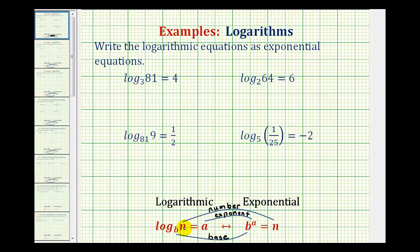Log base b of n equals a means b raised to the power of a equals n. So b is the base in both log form and exponential form. A is the exponent in both log form and exponential form. And n is the number in both log form and exponential form.